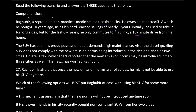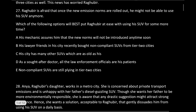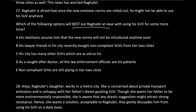The SUV has been his proud possession but demands high maintenance. The diesel-guzzling SUV does not comply with the new emission norms being introduced in tier-one and tier-two cities. Of late, a few newspapers reported that the new emission norms may be introduced in tier-three cities as well, and this has worried Raghuveer — he's afraid that once the new emission norms are rolled out, he might not be able to use his SUV anymore. The question asks: which option will best put Raghuveer at ease?